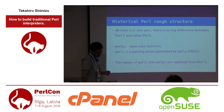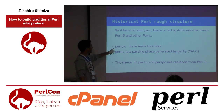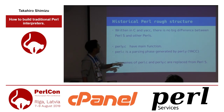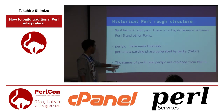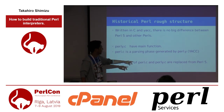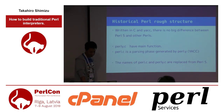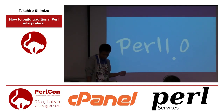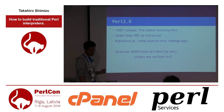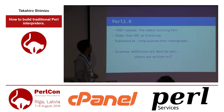Perl is rewritten in C and yacc. There's no big difference between Perl 5 and other Perls. Perl.e.c has the main function. Perl.c is the parser, generated by perl.y using yacc. Their names — perl.c and perl.e.c — are replaced in Perl 5. Perl 1.0 was released in 1987, the oldest existing Perl, older than IRC — it was announced via newsgroup.